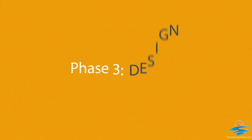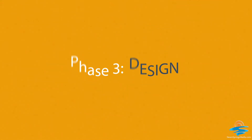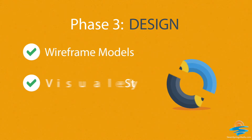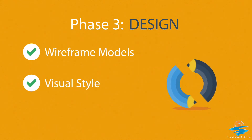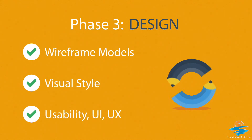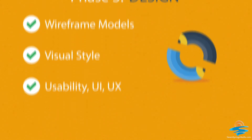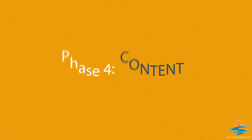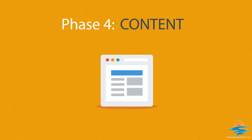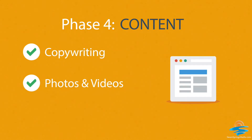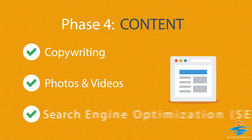Phase 3 — Design: not only do we focus on wireframe models and the visual style in this stage, but also on the usability of the user interface for the best possible user experience. Phase 4 — Content: a very important part of the process is choosing the right text, photos, or videos, all optimized not only for your visitors but also for search engines.